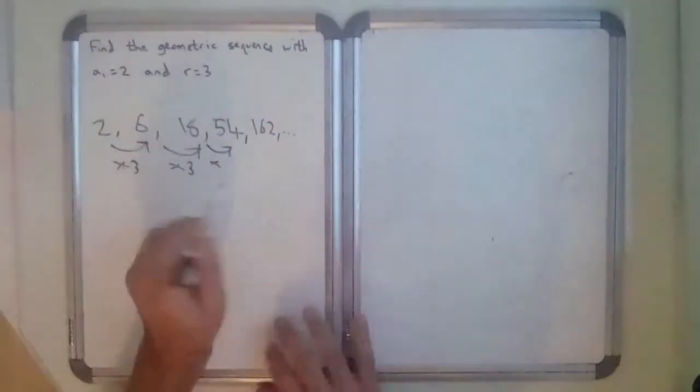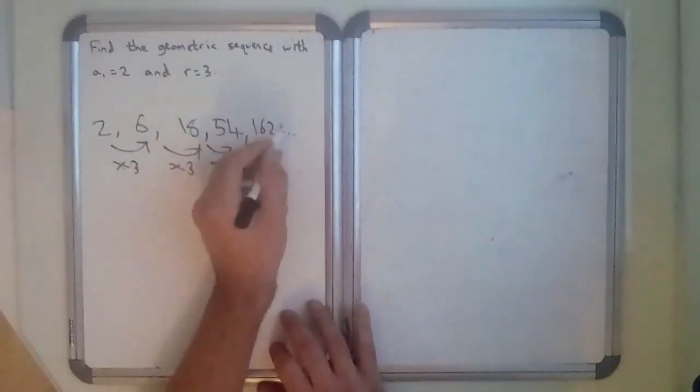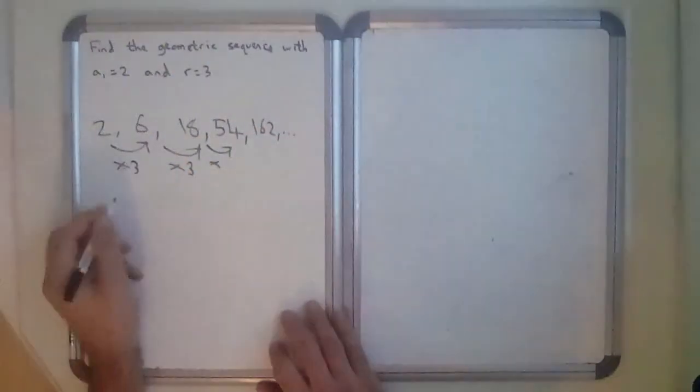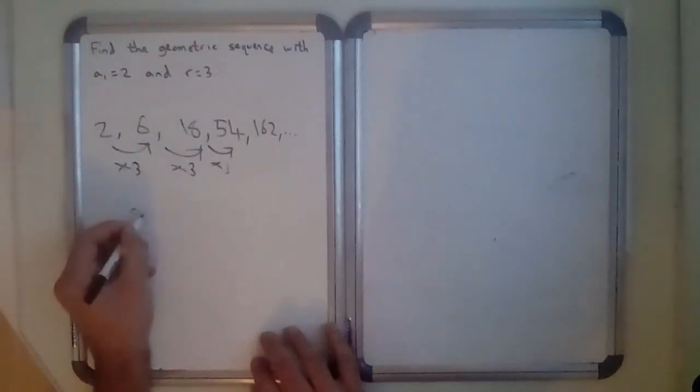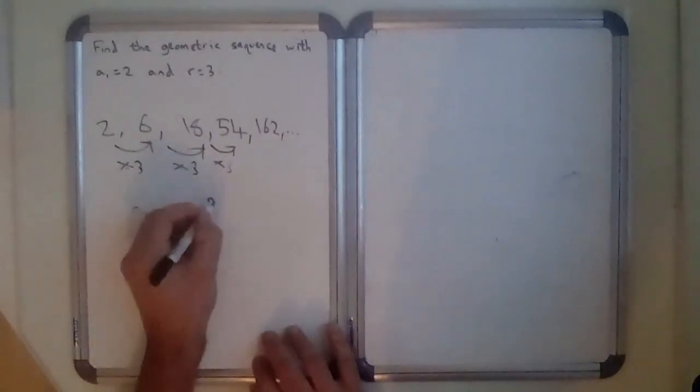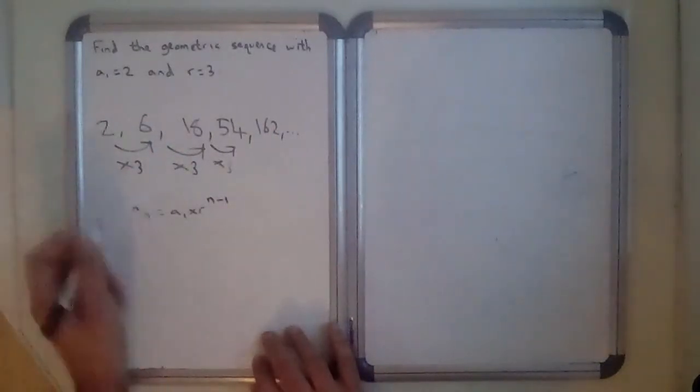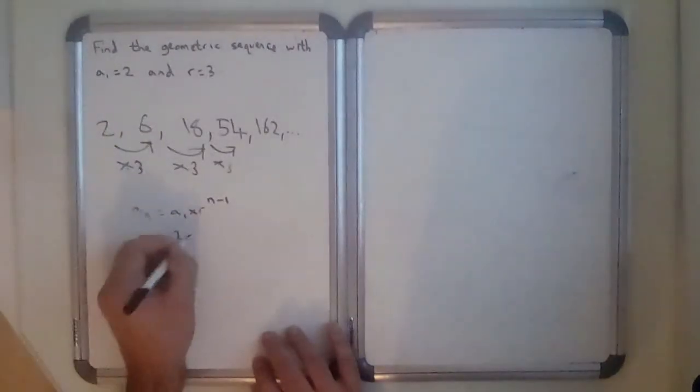But as far as the so on goes, the nth term should potentially be the last number there. So for a geometric sequence, you know that An equals A1 times R to the power n minus 1. So the nth term, An, is going to be A1, which is 2 times 3 to the n minus 1.